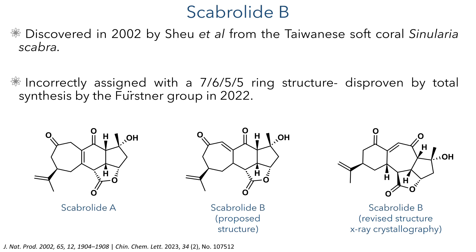The group initially used computational methods to propose a structure for Scabralide B and began their synthesis to test this hypothesis. In 2023, however, an X-ray crystal structure was published, unambiguously proving the structure of this molecule. Interestingly, this molecule was actually independently reported a second time in 2022, however it was reported under the name Scabralide D.